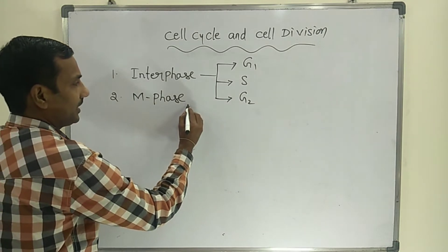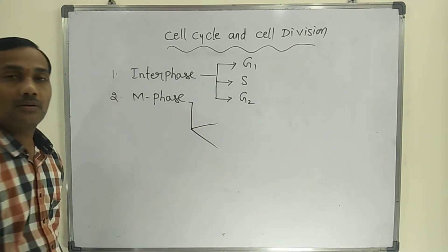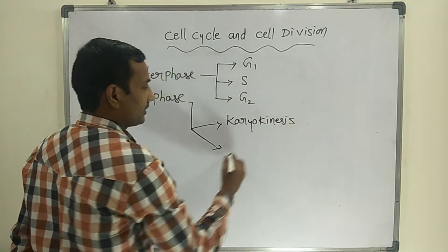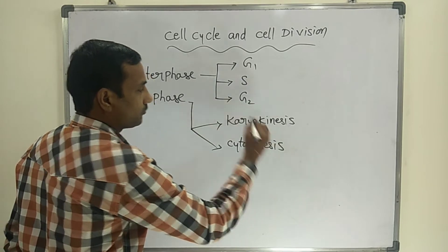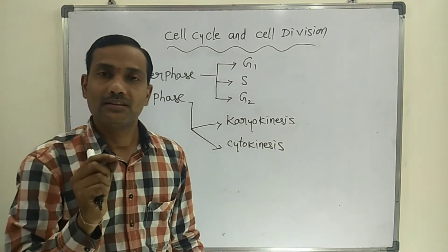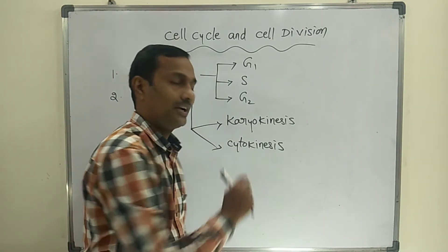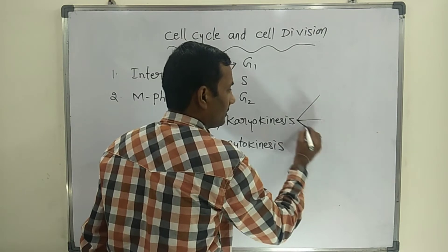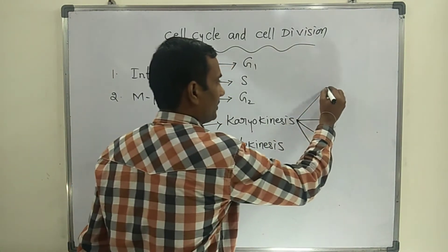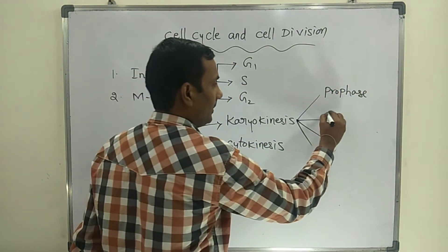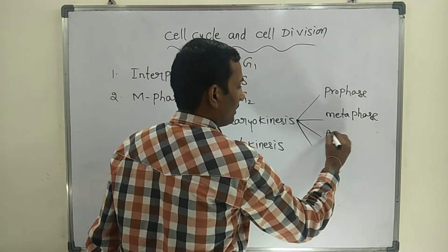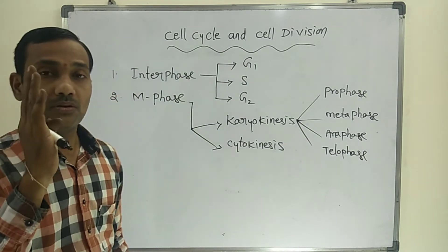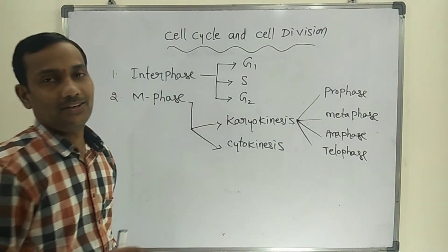M phase is again divided into two sub-phases: karyokinesis and cytokinesis. Karyokinesis is the division of the nucleus; cytokinesis is the division of the cytoplasm. During karyokinesis, there are four sub-phases: prophase, metaphase, anaphase, and telophase. These are the four sub-phases included in karyokinesis.